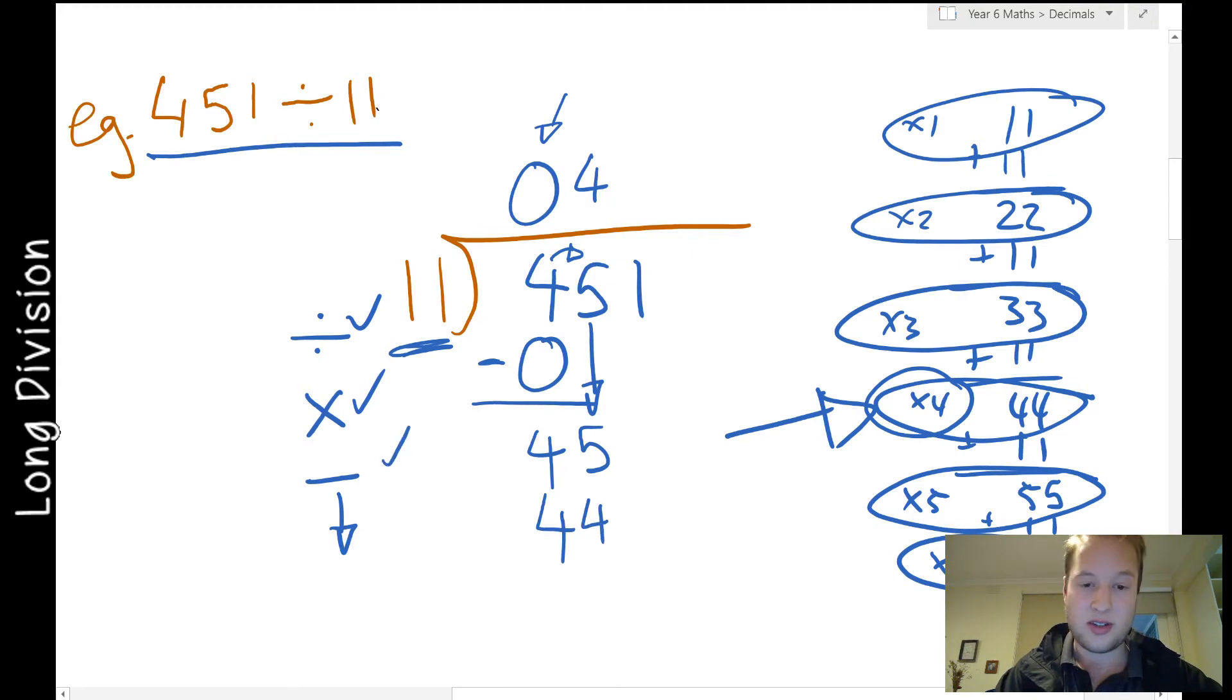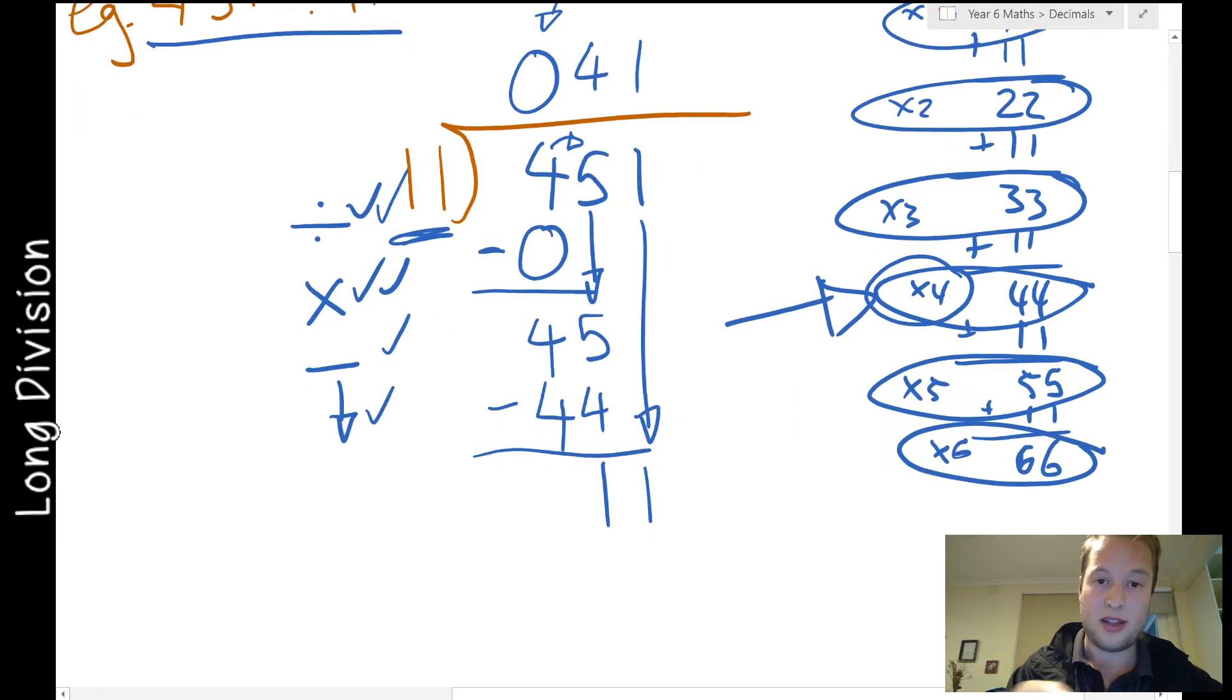Now I'm going to do my subtraction step and put in this little line here. This is how you work out the remainder. So 45 take away 44 is 1. And now I'm going to do the arrow step and bring down the next number. Starting at 11 into 11 is 1, this is division. And then 11 times 1, my multiplication step, so 11 times this number up here is 11.